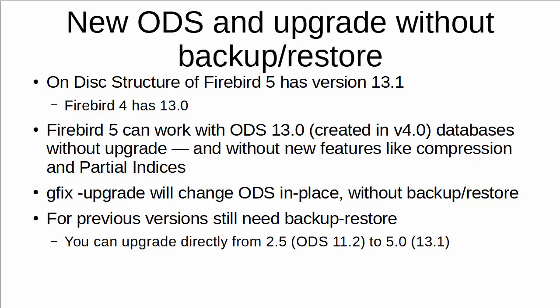In Firebird 5 we can work with databases created in Firebird 4 without any modification. Practically, it means you can open a Firebird 4 database with Firebird 5, work with it — for test reasons or even in production. And if something is wrong, you can simply switch the instances and go back to Firebird 4, though it will require a reconnect of all connections. However, working with a Firebird 4 format database in Firebird 5 will not give you the ability to use all new features — for example, you won't be able to use compression of records, partial indices, and other things.